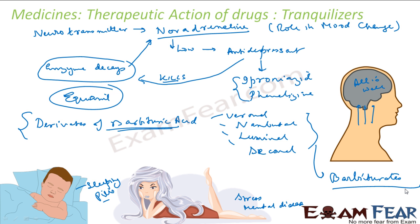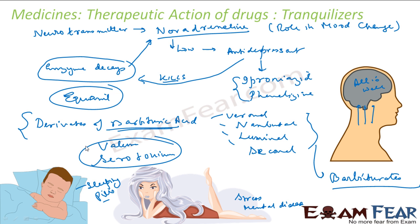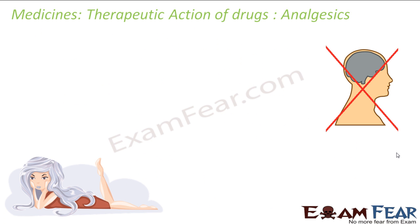Barbiturates are also hypnotics and are used in sleeping pills. Other drugs in the market include valium and serotonin-related drugs. There are so many drugs used as tranquilizers — you should remember some of their names. These tranquilizers impact the nervous system of the body. The next category is analgesics.